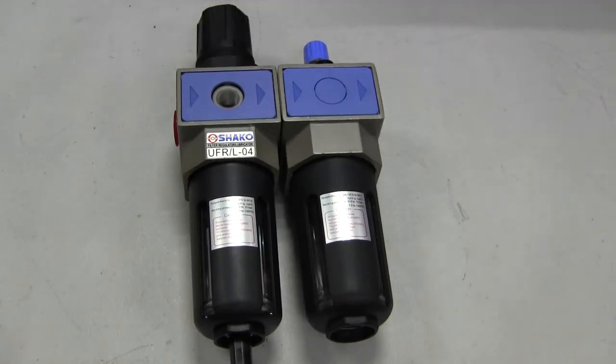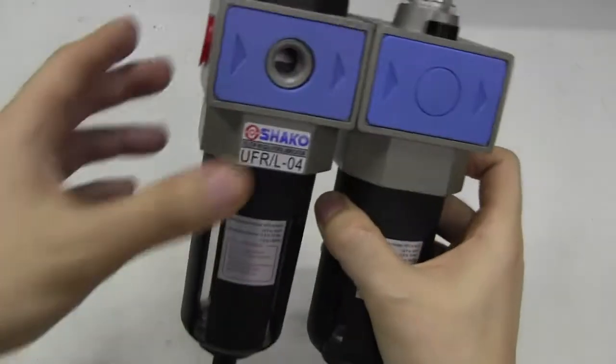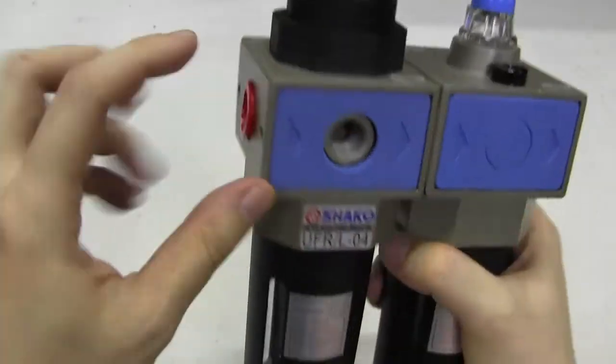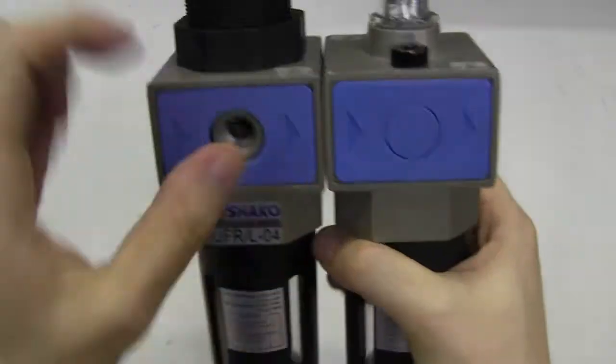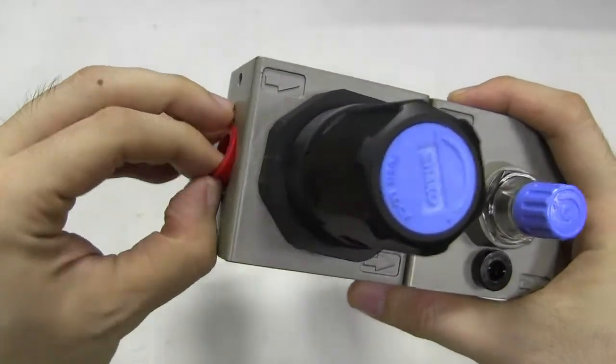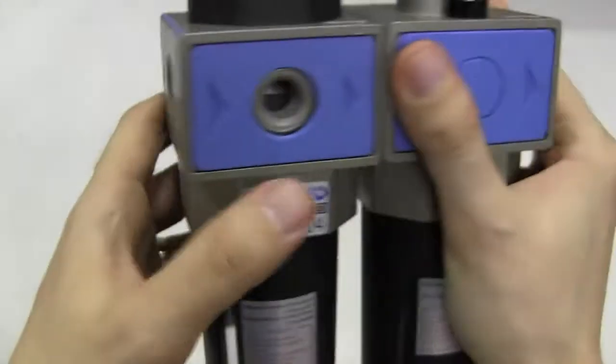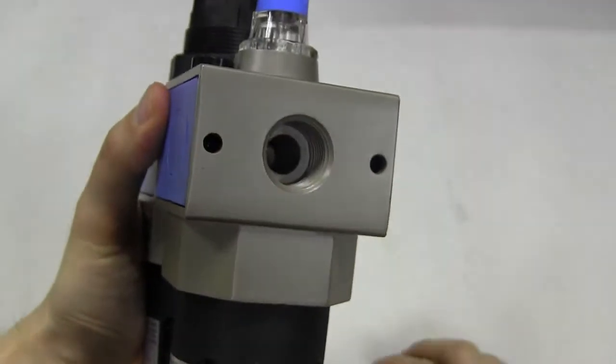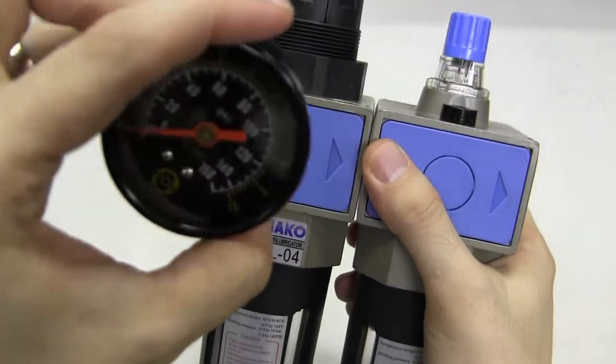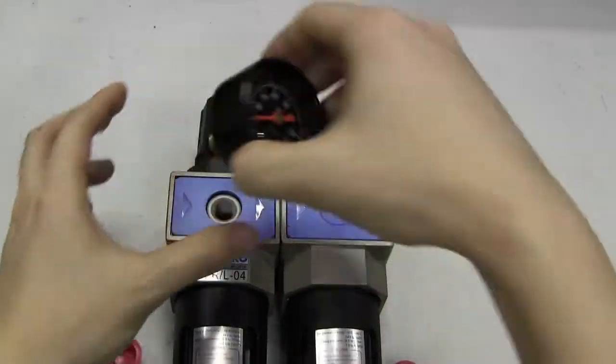How do we use the filter regulator and lubricator? First of all, if you're going to install the air, make sure you install it in the right port. We can see here there's arrows pointing this way and up here there's arrows pointing this way. So this here is the inlet port, 1/2 inch port size, and here is the outlet port.